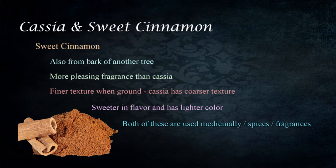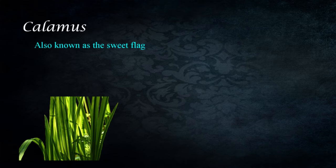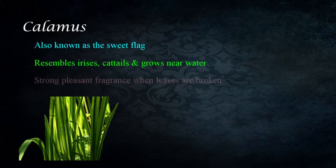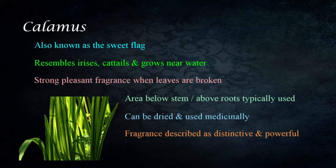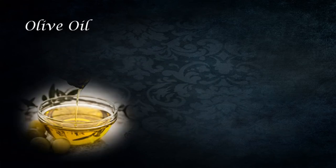Calamus, also known as the sweet flag, is a plant that resembles irises or cattails and grows near water. The calamus has a strong, pleasant fragrance that can be detected by breaking the leaves. The part of the plant that is used is typically the area below the stem and directly above the root structures. These can be dried and used medicinally, and the fragrance of calamus is described as distinctive and very powerful.